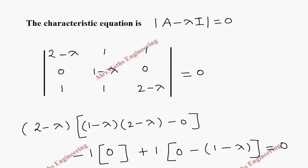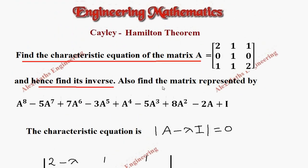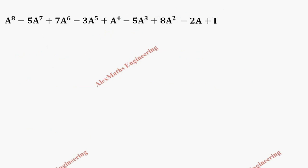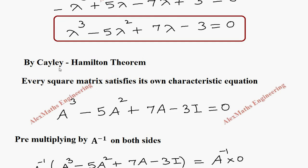Now as a third part of the question, we have to find the matrix represented by A⁸ minus 5A⁷ plus 7A⁶ minus 3A⁵ plus A⁴ minus 5A³ plus 8A² minus 2A plus I. We are going to divide this entire expression by the characteristic equation obtained from the Cayley-Hamilton theorem, which is A cubed minus 5A squared plus 7A minus 3.